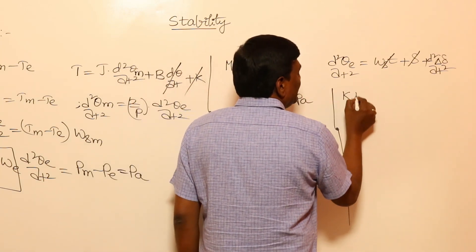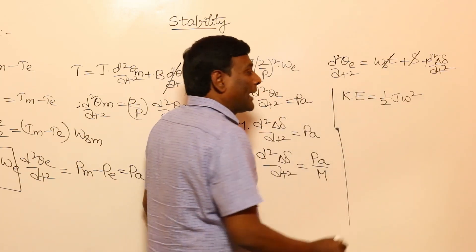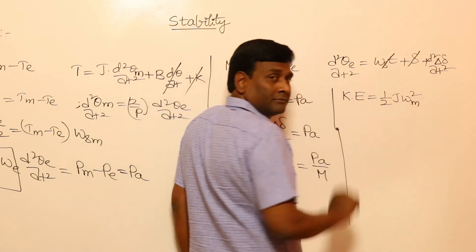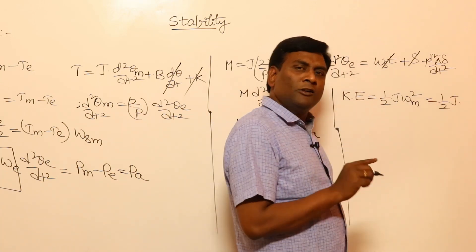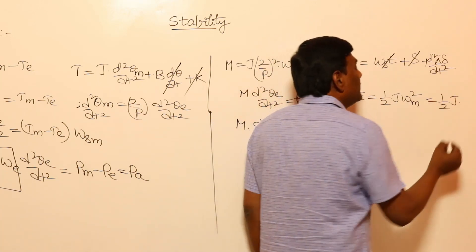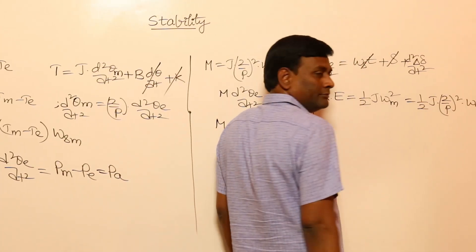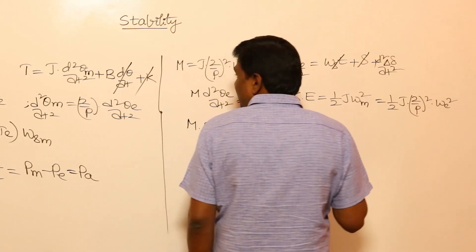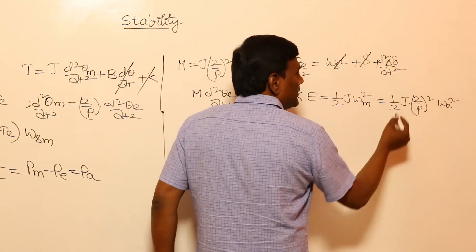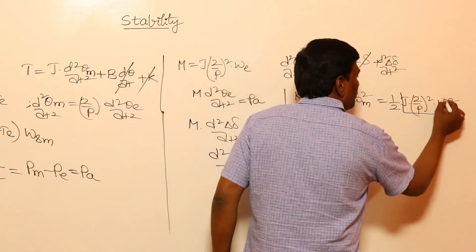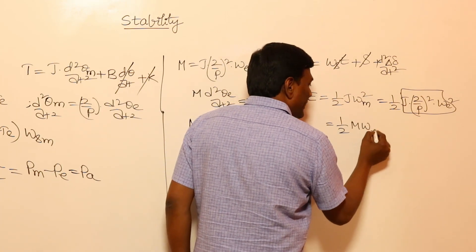Kinetic energy KE = ½·J·ω²_mechanical = ½·J·(2/P)²·ω²_electrical. Since J·(2/P)²·ω_e = M, this simplifies to KE = ½·M·ω_e. Kinetic energy is also expressed as G·H, where G is the machine capacity in MVA.